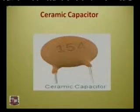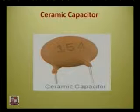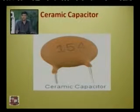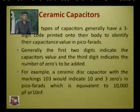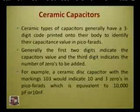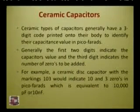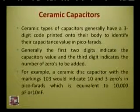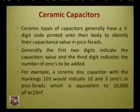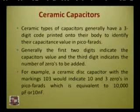Ceramic capacitors have a three-digit code printed on their body to identify their capacitance value in picofarads. The first two digits indicate the capacitor value, and the third digit indicates the number of zeros to add. For example, 103 means 10 followed by three zeros = 10,000 picofarad or 10 nanofarad. For 154: first two digits give 15, add four zeros = 150,000 picofarad — or you can convert to nanofarad.